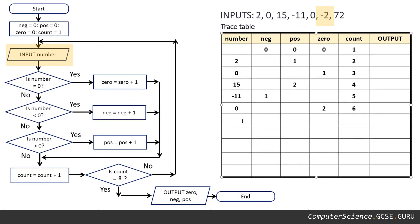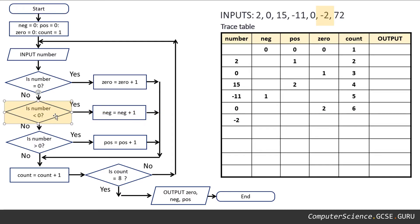Our next input is minus two. Minus two gets stored as number. Is our latest value of number zero? No, it's minus two. Is our latest value of number less than zero? Yes, it's minus two — so look at the neg variable.